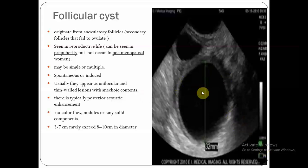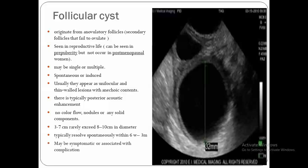The size of follicular cysts is usually 3 to 7 centimeters and rarely exceeds 8 to 10 centimeters. They will resolve spontaneously within 6 weeks up to 3 months, but may be symptomatic or associated with complications.